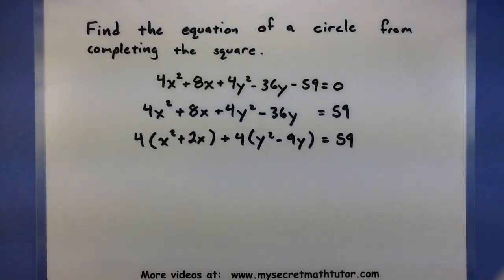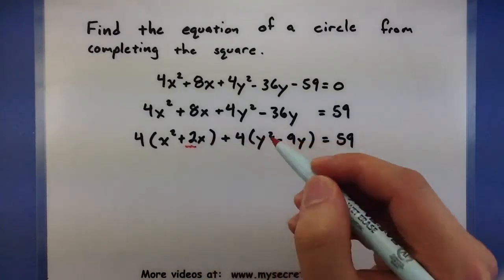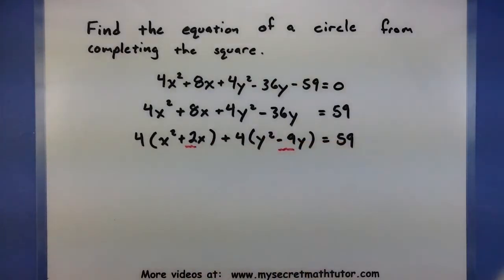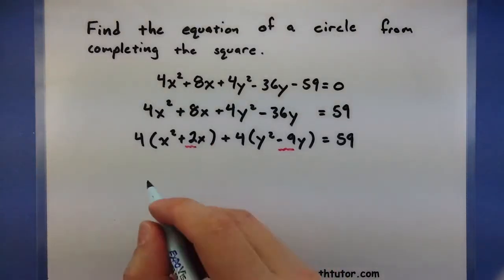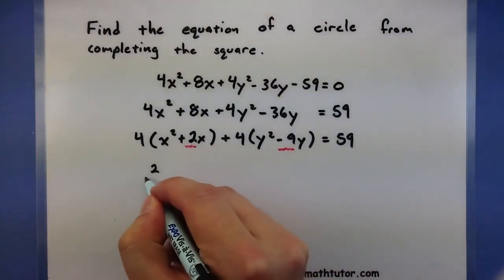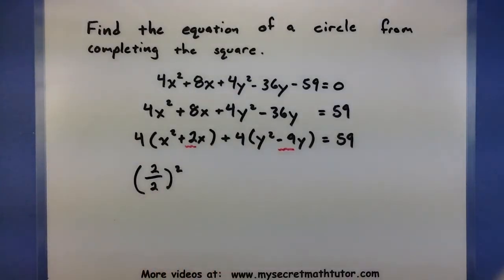Now the next step is probably one of the most important. We want to end up adding a number that will make this factor very nicely. To figure out that number, you'll take the coefficients in front of your linear terms, divide them by 2, and square them. This will give us a couple of numbers that, when added, will make things work out very nicely. Let's start off with the x's — take the 2, divide it by 2, and square it to see what you get.